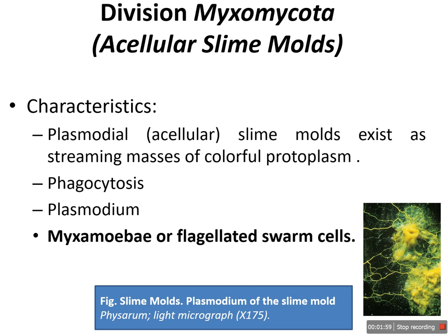During this mode of ingestion, food particles — usually bacteria — become surrounded by the pseudopodia of the myxamoeba. Once the food has been engulfed, it is surrounded by a membrane forming food vacuoles where hydrolytic enzymes are secreted to digest the food. In contrast, in fungi the assimilative stage — mycelium and yeast — are both surrounded by a rigid cell wall and obtain their food by means of absorption.